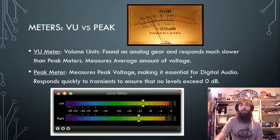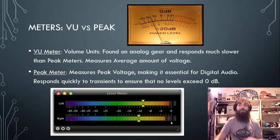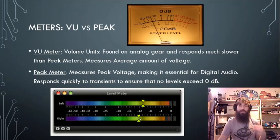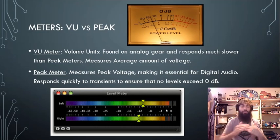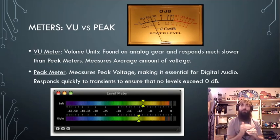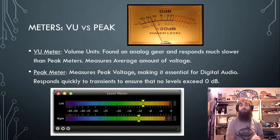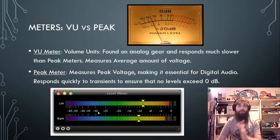Peak meters measure peak voltages, making them essential for digital audio. They respond quickly to transients and ensure that no levels exceed the zero decibel mark. In a digital console, if we exceed that zero line, the signal will be too loud for the device to convert to digital and it will come across as popping, clicking, and distortion. We avoid that by watching our meters and keeping the signal below zero.